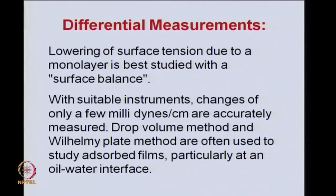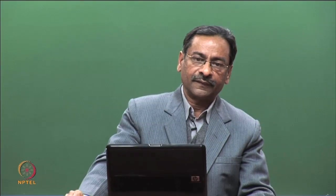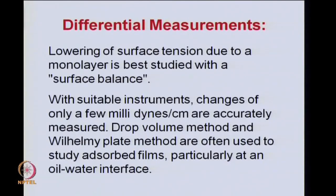We then go into what will be classified as differential measurements. For monolayers: if you have a monolayer present on a liquid, there will be a certain repulsive pressure within the monolayer. We have identified that as a positive repulsive pressure pi, which lowers the surface tension below that for the pure liquid. This lowering of surface tension due to the monolayer is studied using a surface balance, and with suitable instrumentation it is possible to measure changes to within a few milli-dynes per centimeter.